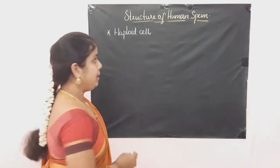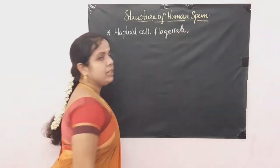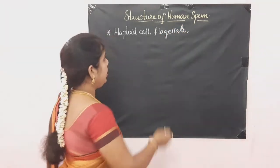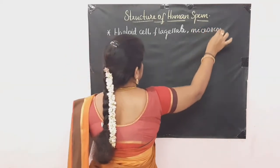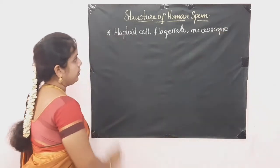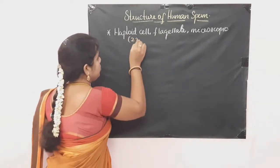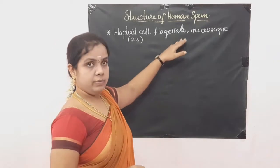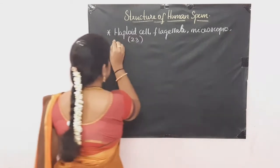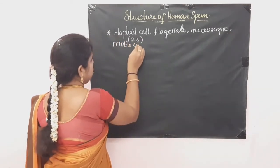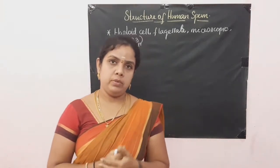A human sperm is a haploid cell and is a flagellate. Flagellate means it has a cellular part which can move and is microscopic in nature. So human sperm is a haploid cell which consists of 23 chromosomes. It is flagellate, microscopic in nature, and it is a motile cell.